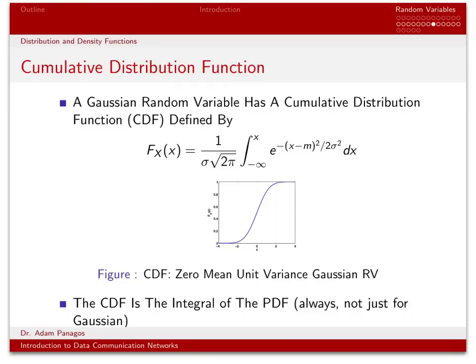Now let's look at the CDF for a Gaussian random variable. The cumulative distribution function is defined by this equation. As expected, the CDF is just the integral of the PDF — the expression e to the minus (x minus m) squared over 2 sigma squared with 1 over sigma root 2π out front — integrated from minus infinity to the value x.